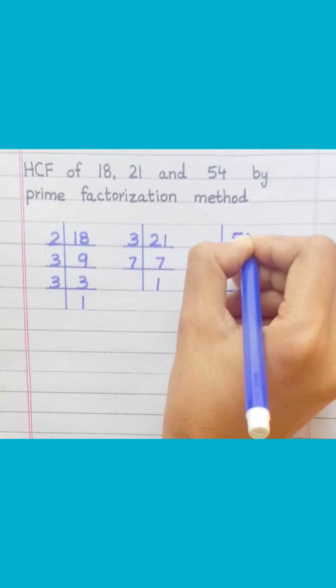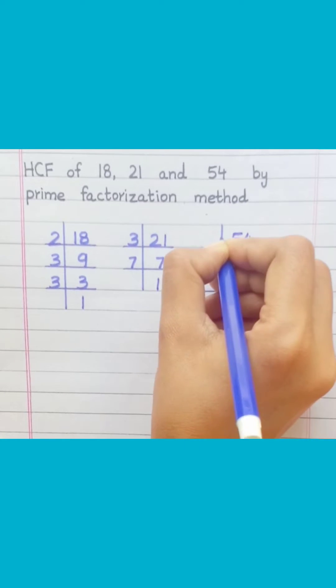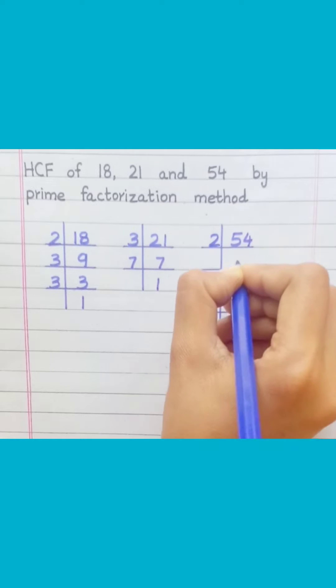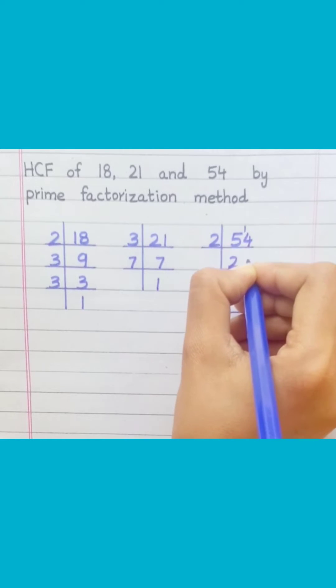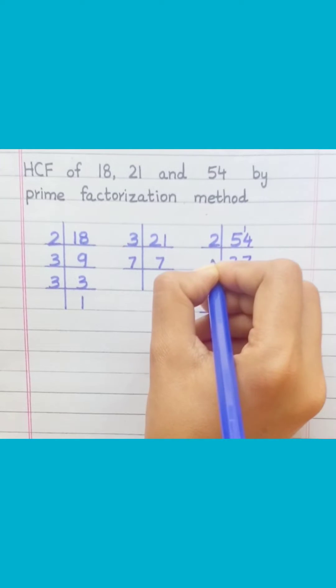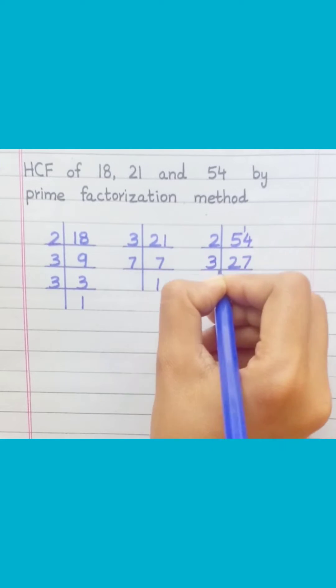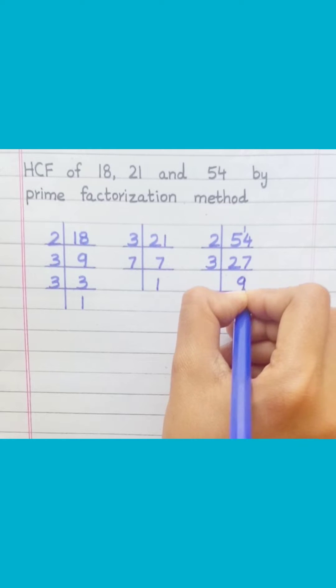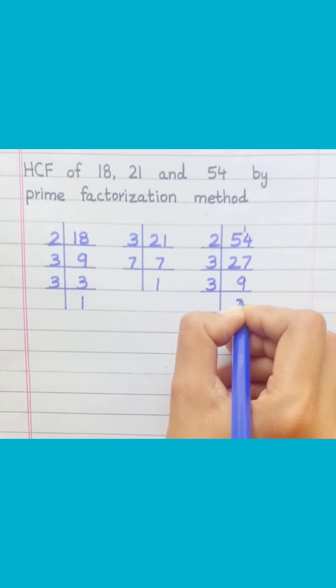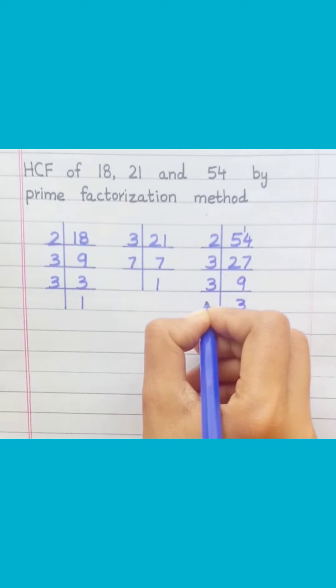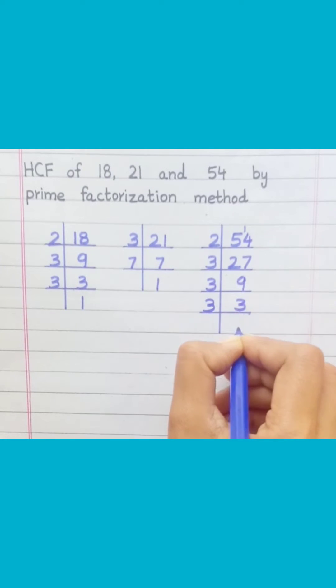54: two twos are 4, two sevens are 14, three nines are 27, three threes are 9, three ones are 3.